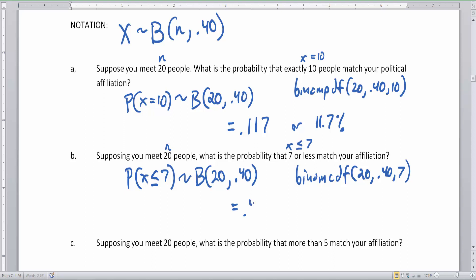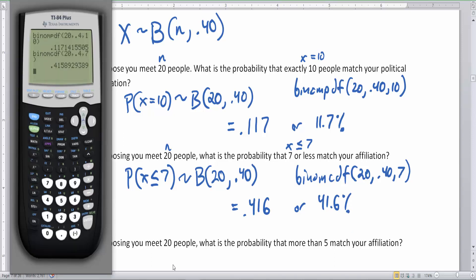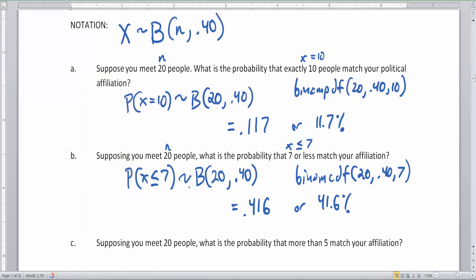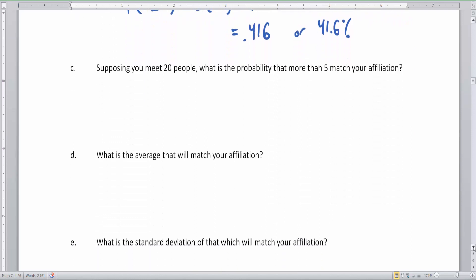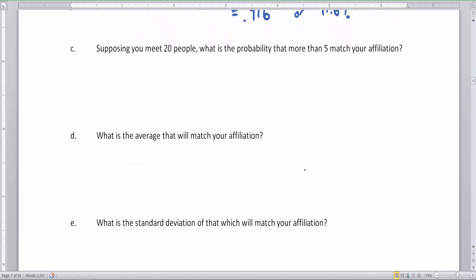Yeah, that gives us that binomial probability cumulatively from seven through zero. So that means that there's a 41.6% chance that seven or fewer people in that group of 20 agree with you on your political affiliation. So that's pretty likely. Not as likely as 50%, but it's pretty good.